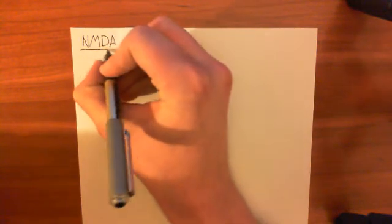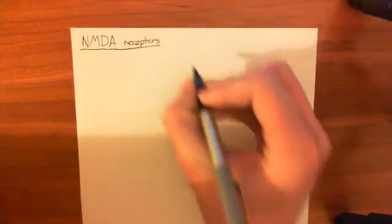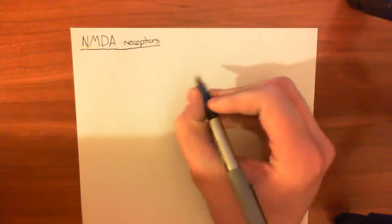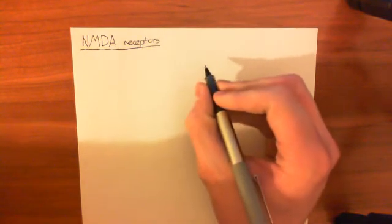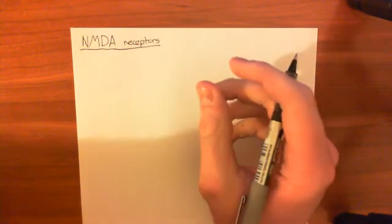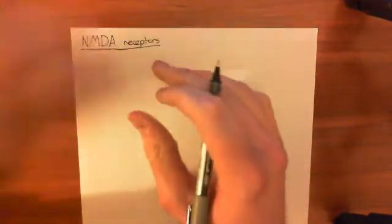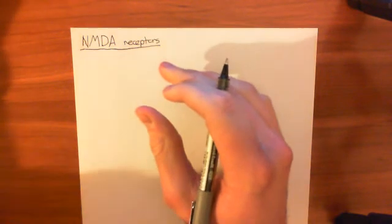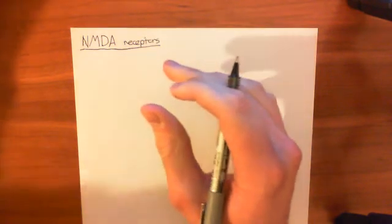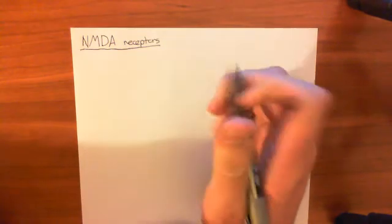The outline for the way we're going to do this is: we're initially going to look at its structure, then we're going to look at how it functions and how it causes depolarization of the cell, and finally we'll look at a few drugs that have their actions on the NMDA receptors. Let's begin with its structure.